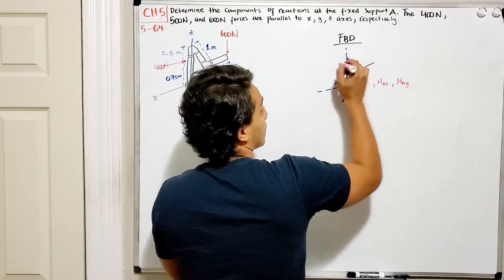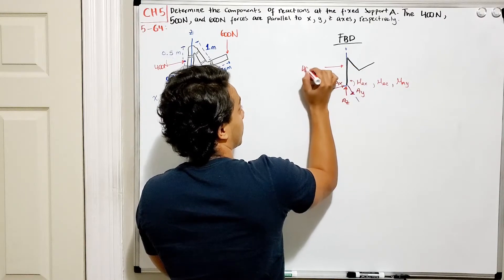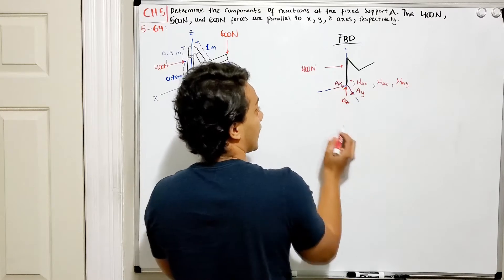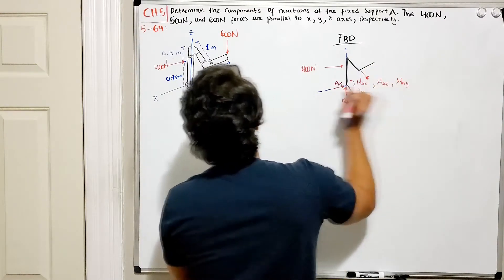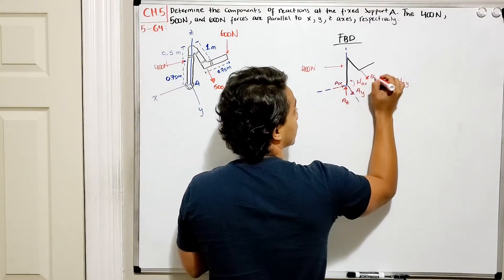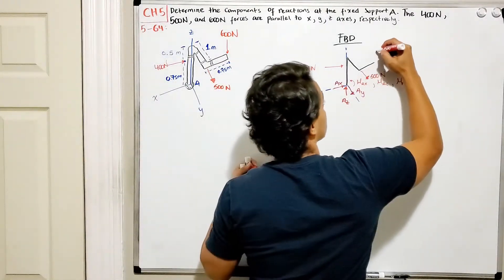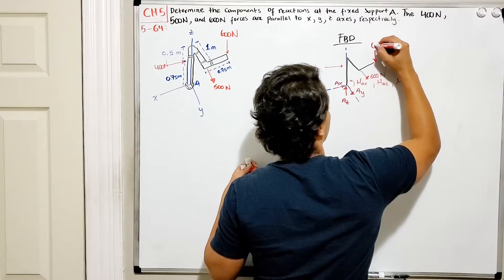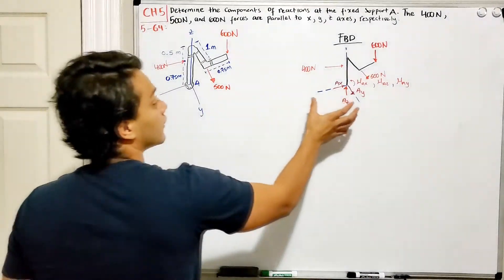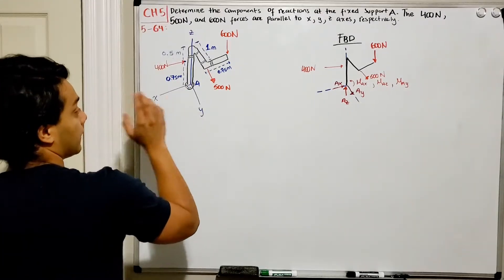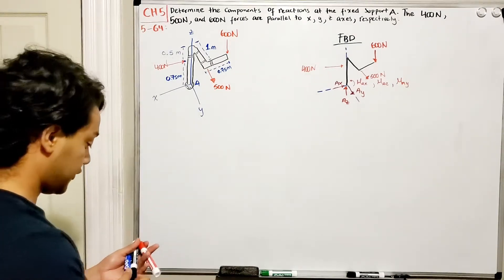I also have my 400 Newtons, which is parallel to my X axis. Then I have my 500 Newtons, and finally my 600 Newtons going straight down, parallel to my Z axis. We've now redrawn the tube and placed all the reactions of the fixed support on the free body diagram.